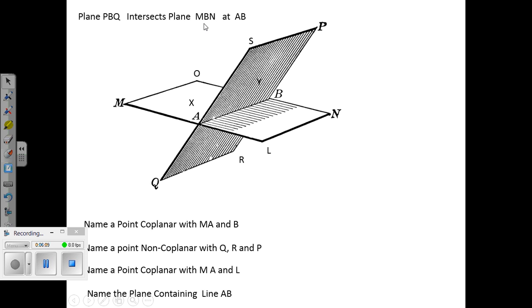Here's intersecting planes. These two planes intersect at AB. Name a point coplanar that is on the same plane as M, A, and B. MAB is this plane which is kind of horizontal. A point coplanar in that plane: N or L.